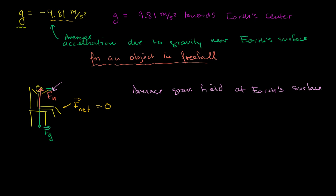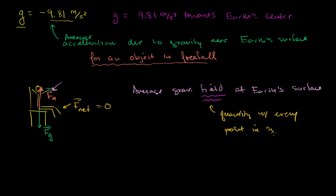A field, when you think of it in the physics context, is just something that associates a quantity with every point in space. It can be a scalar quantity — in which case you'd call it a scalar field, and it would just be a value — or it could be a vector quantity, which would be a magnitude and a direction associated with every point in space, in which case you're dealing with a vector field.